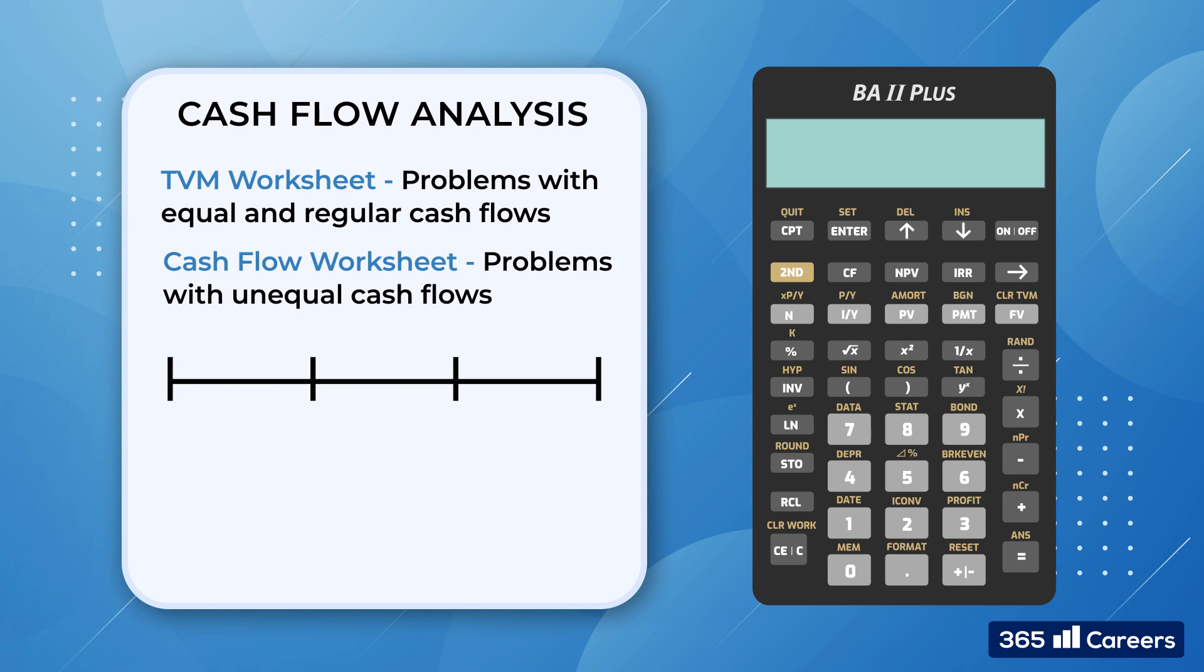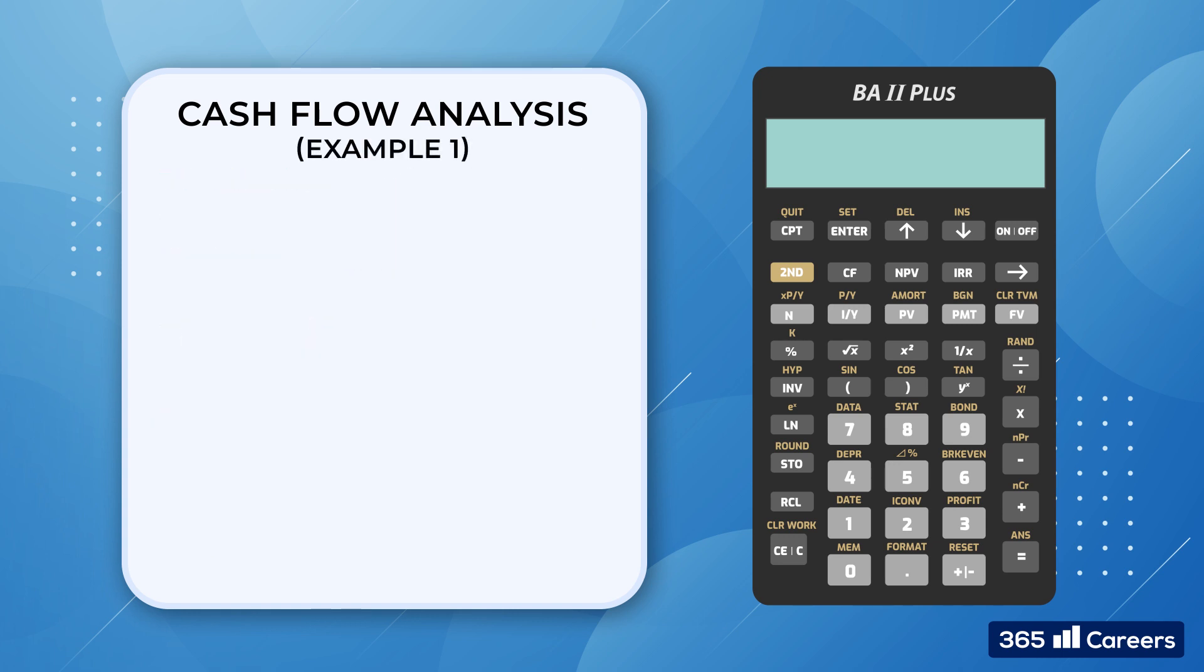A typical application you could think of is a capital budgeting exercise. In such a context, we need to determine the viability of an investment project, which requires an initial investment but then generates a series of unequal cash inflows in subsequent years. The CF key is in the second row of the Texas Instruments BA-2 Plus calculator. The best way to illustrate how it works is by providing an example.